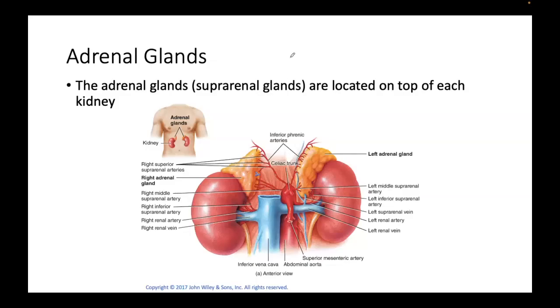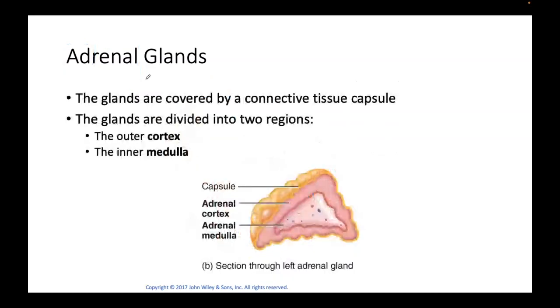Hi class, Dr. Lindner. Let's take a look at the adrenal glands. When we look at the word adrenal, we see 'renal' — renal means kidney. 'Ad' means you're adding something to the kidney. Sometimes it's called suprarenal: supra means above, and you'll see that the adrenals are just above both kidneys. So adrenal or suprarenal.